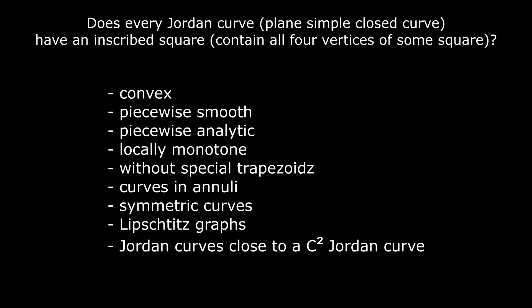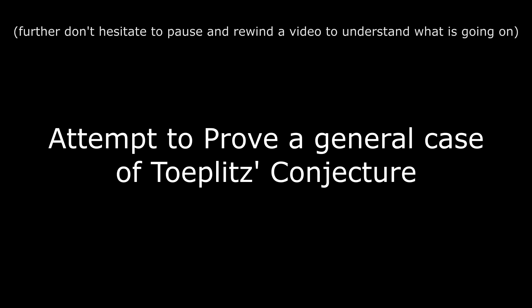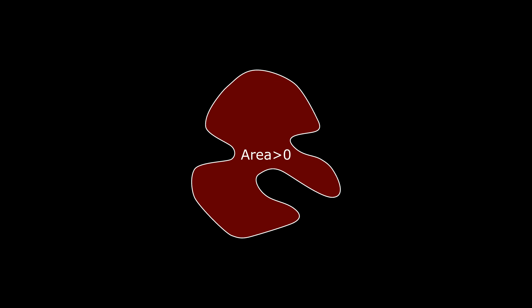It's true for convex or piecewise smooth curves and for some special cases of curve configuration. Jordan curves have a property to divide the plane into interior and exterior regions. Such curves will always have a positive area.